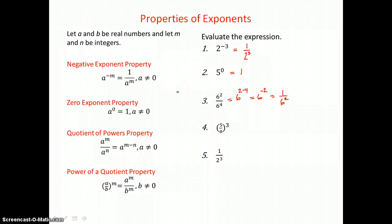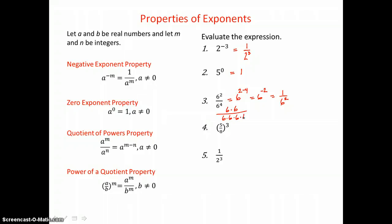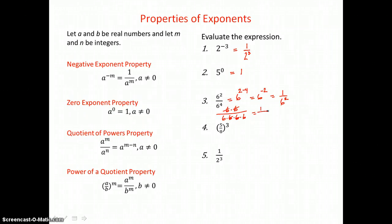We can show that by expanding. We have 2 factors of 6 in the top and 4 factors of 6 in the denominator of this fraction. We know that we can cancel like factors top and bottom, so we end up with 1 in the numerator and 2 factors of 6 in the denominator.